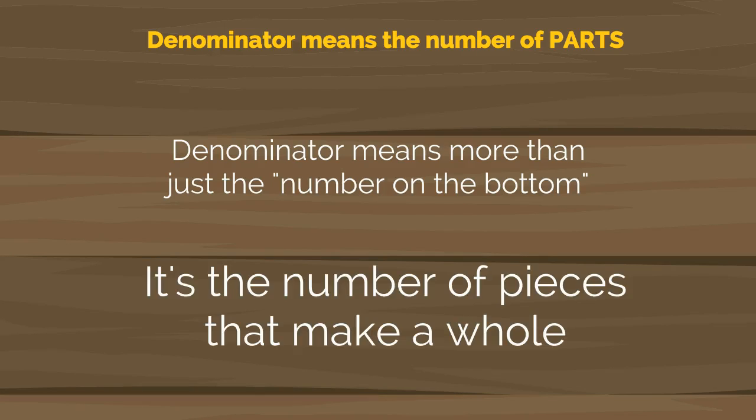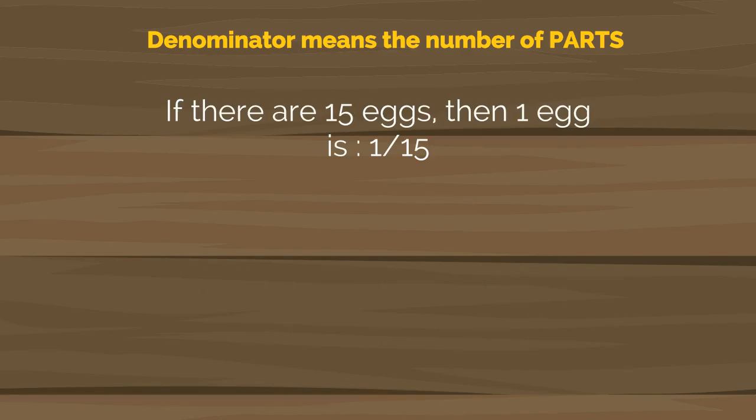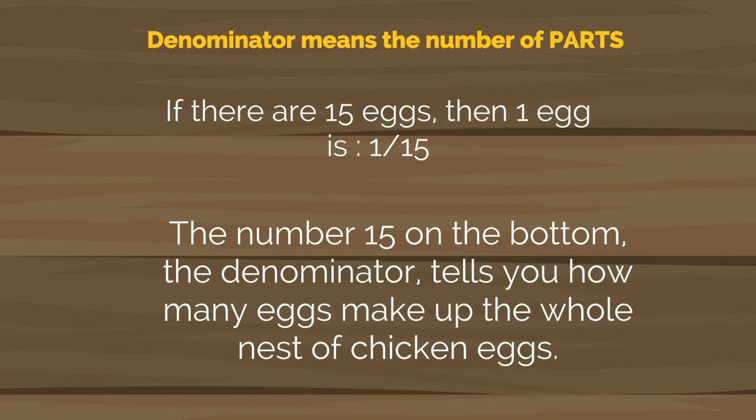Denominator means number of parts. Denominator means more than just the number on the bottom. It's the number of pieces that make up a whole. So if there are 15 eggs, then 1 egg is 1/15. The number 15 on the bottom tells you how many eggs make the whole nest of chicken eggs.